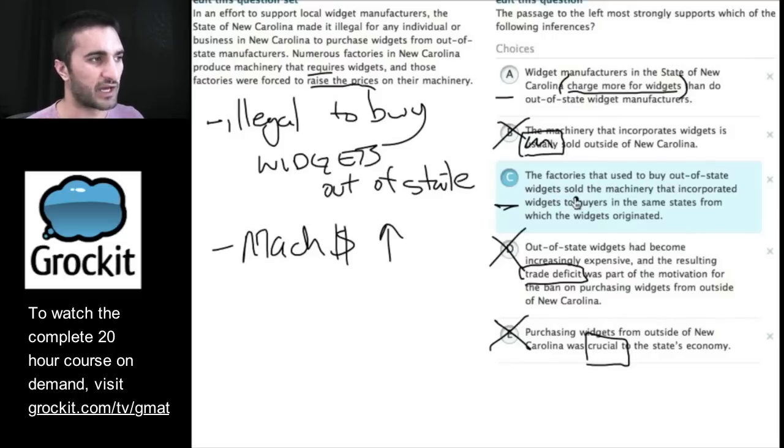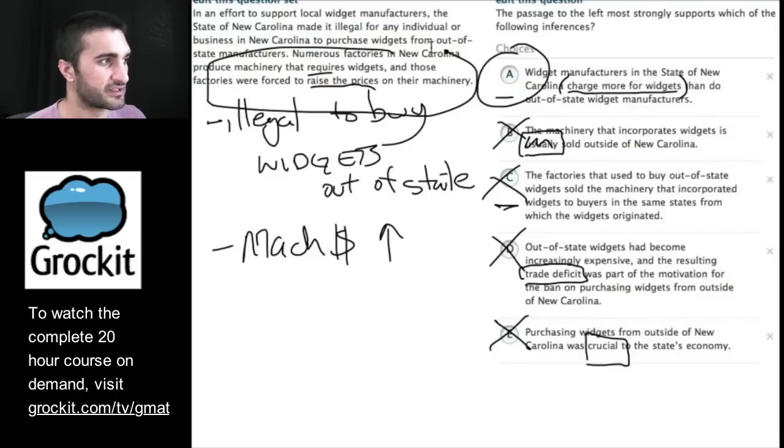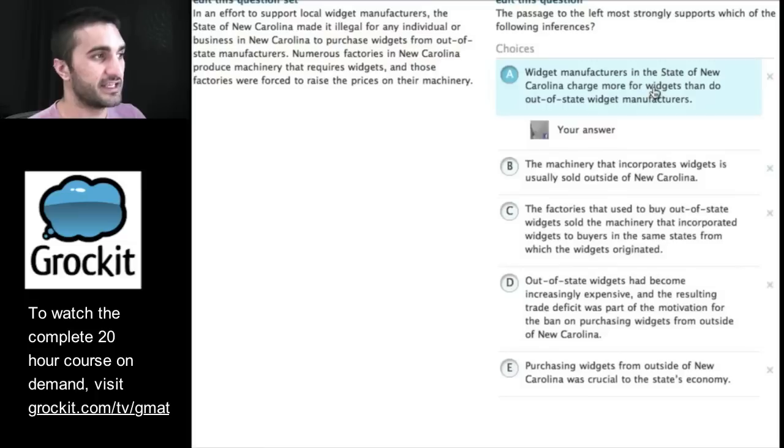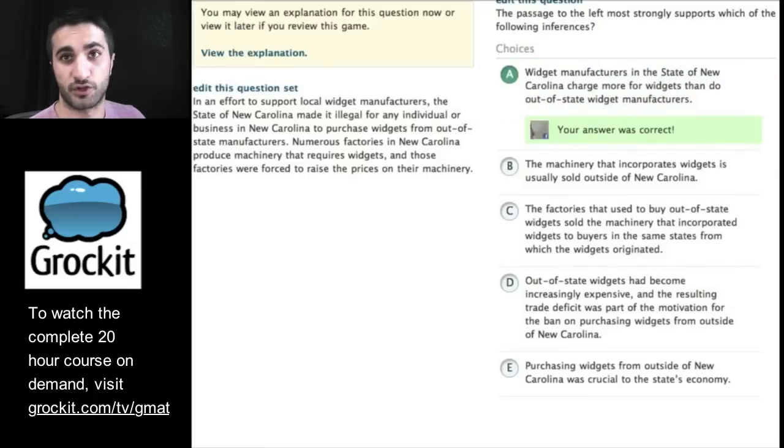Let's go back to C. The factories that used to buy out-of-state widgets sold the machinery that incorporated widgets to buyers in the same states from which the widgets originated. I don't know why this has to be true. It seems pretty convoluted. I can't point to it. I'm just going to get rid of it. A. Widget manufacturers in the new state of Carolina charge more for widgets than do out-of-state widget manufacturers. That has to be true because they raise their prices on the machinery for the folks using it. It's the least sucky answer choice, and it's correct.